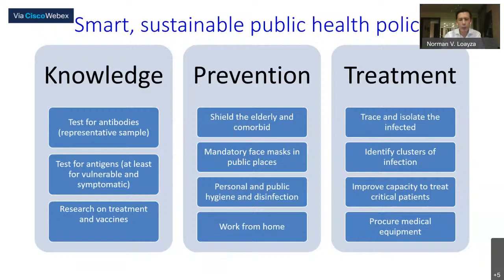Drawing from the World Development Report 2014 on managing risk, I think this smart and sustainable public health policy should be based on three pillars: knowledge, prevention, and treatment. Knowledge can be acquired through testing for antibodies and antigens and also research for vaccines. Prevention is about shielding the elderly and comorbid and using other measures that can actually prevent contagion of the disease.